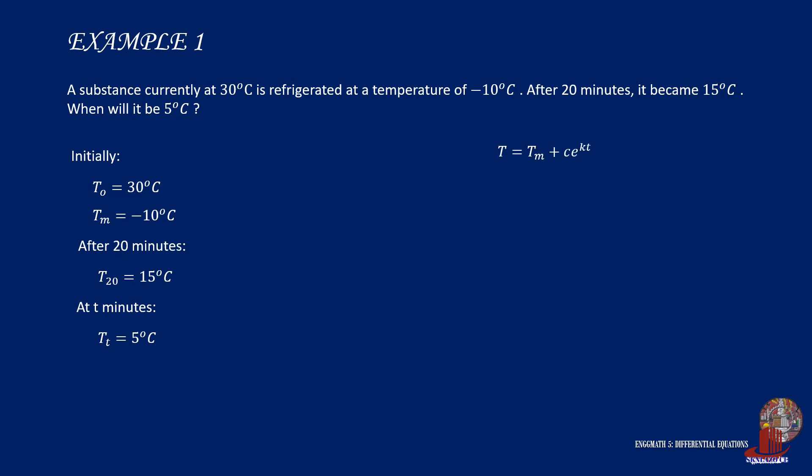With the working equation T is equal to T sub m plus C times E raised to K times t, let's identify the values of the parameters C and K. So initially, the temperature is 30 degrees and this is equated to the temperature of the medium, which is negative 10 degrees plus C times E raised to negative K times 0. Since any number raised to 0 is just 1, we were able to determine C as 30 plus 10 degrees or 40 degrees. So the modified equation is now T is equal to T sub m plus 40 degrees times E raised to K times t.